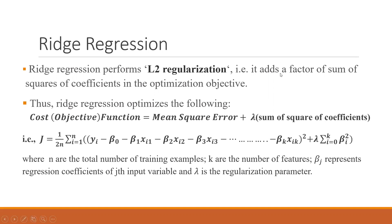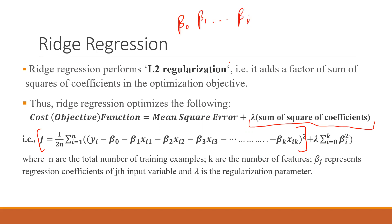Ridge helps us add a factor — the sum of squares of coefficients — to the optimization objective. The initial objective function was mean square error, and in L2 regression we add Lambda into the sum of squares of coefficients, where Lambda is the regularization parameter. The coefficients are beta_0, beta_1, up to beta_K. This is where we ended the previous lecture.